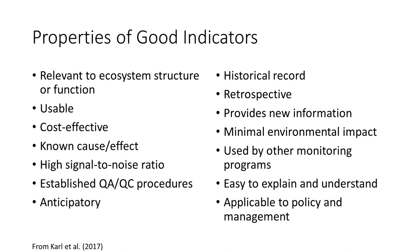Useful and informative indicators have the following traits. They're relevant to ecosystem structure or function—indicators must relate in a known way to the structure or function of an ecosystem of interest, and documentation through a conceptual model is one way to do this. Indicators also need to be usable, meaning there's sufficient documentation to select appropriate methods and calculate the indicators from measurements or observations. They also need to be cost effective, meaning the cost of collecting an indicator is low relative to competing indicators.